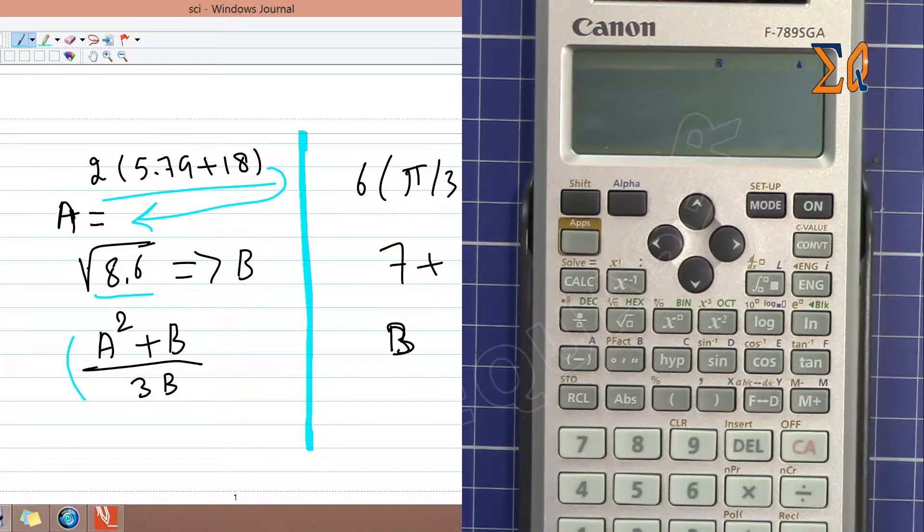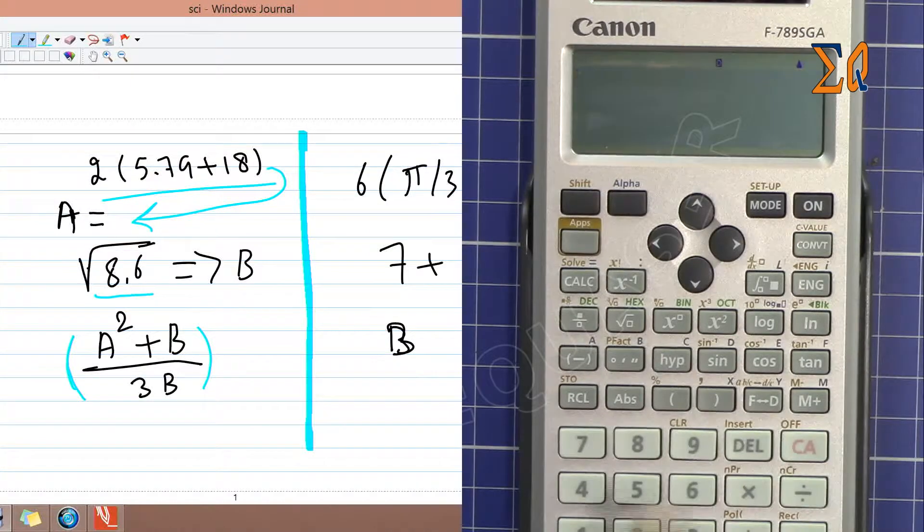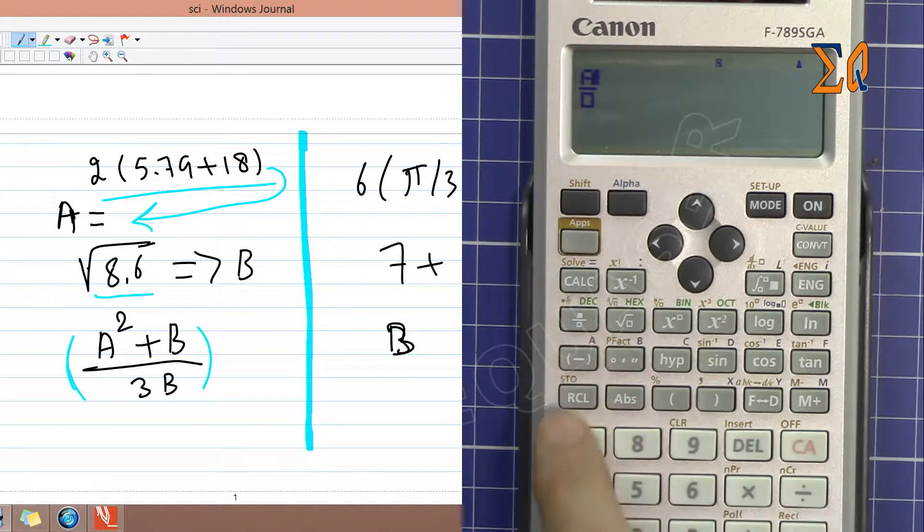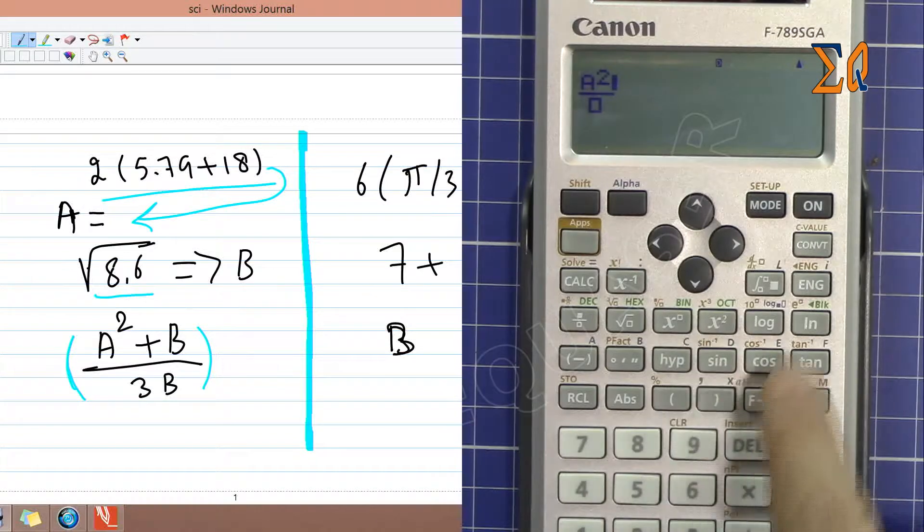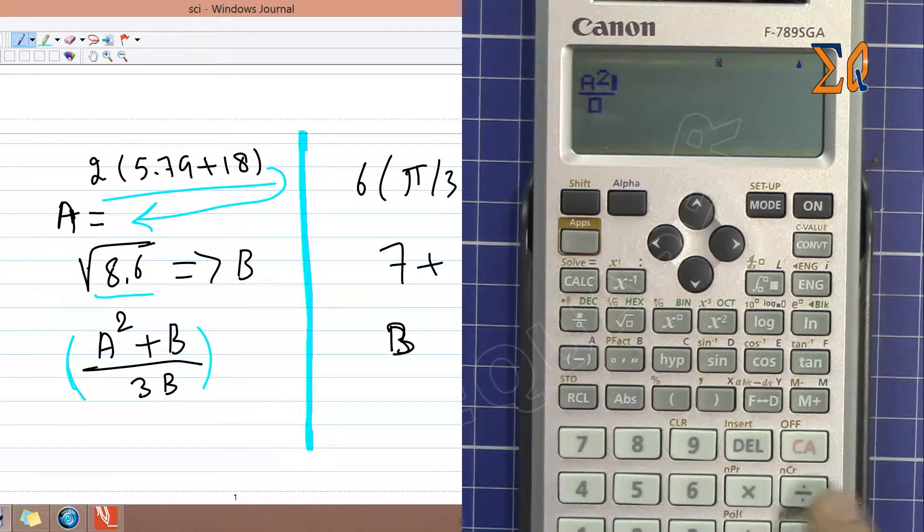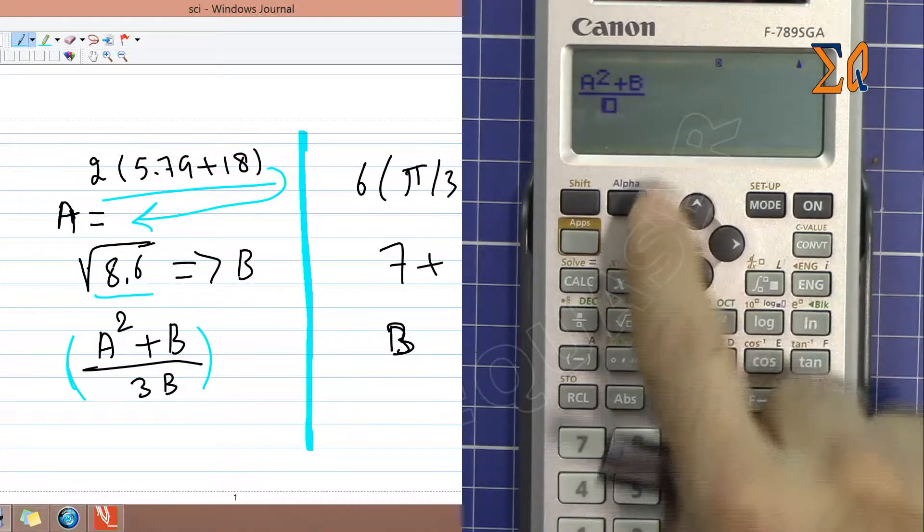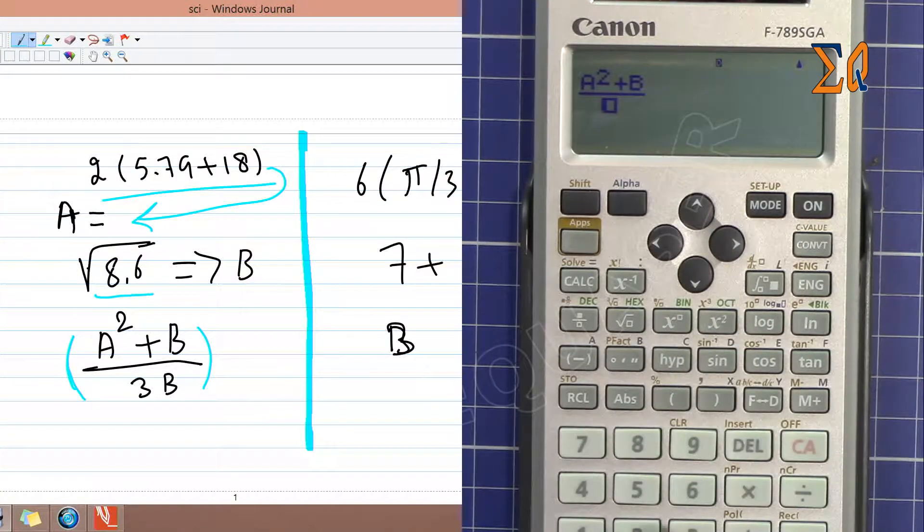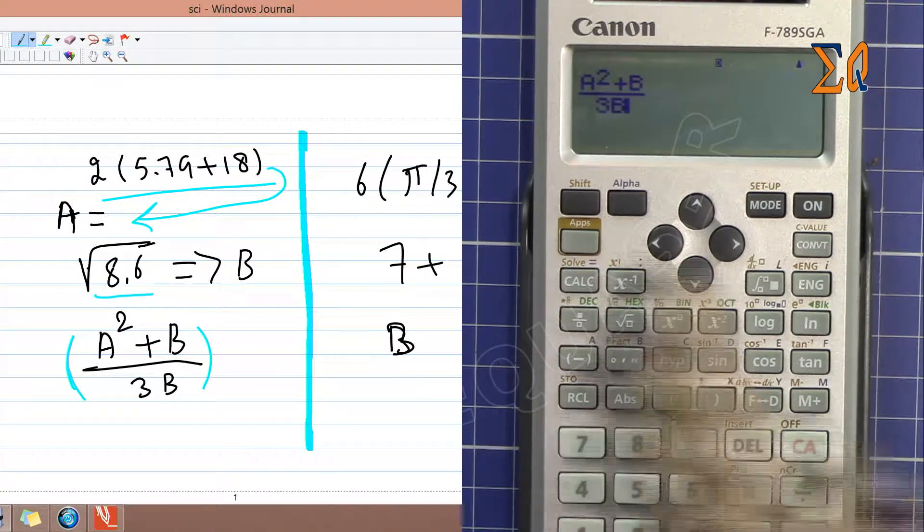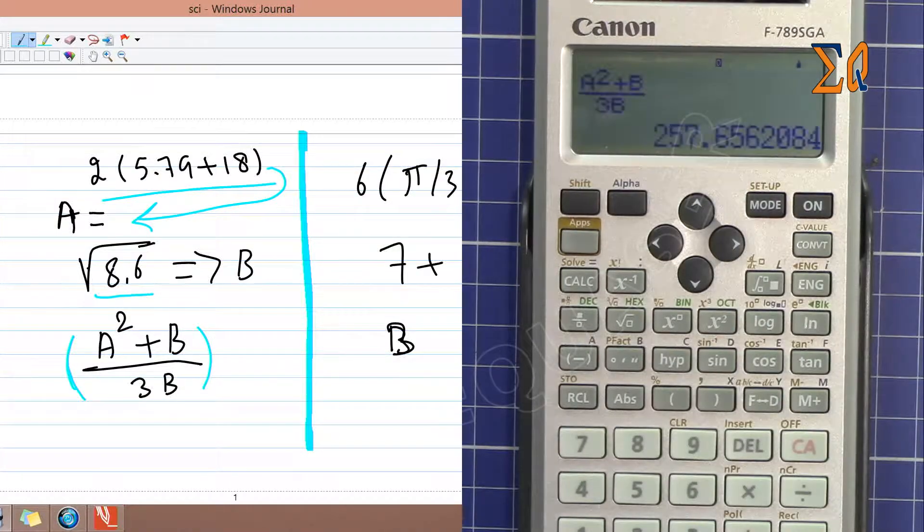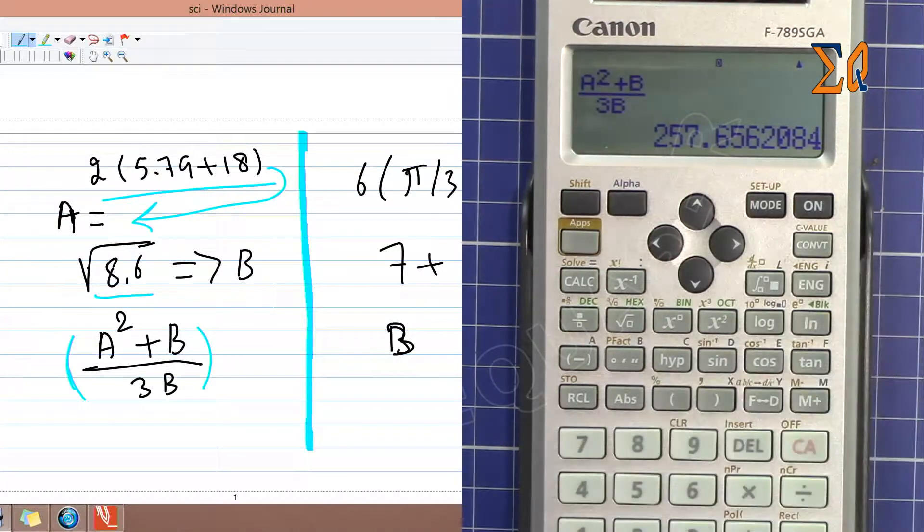So now let's do the A squared. This A squared plus B over 3B. I'm pressing recall A and then squared, and then plus recall B. With the arrow come to the denominator and put 3 and then recall B. So press equal sign and that's the result of the calculation using the memory of A and B.